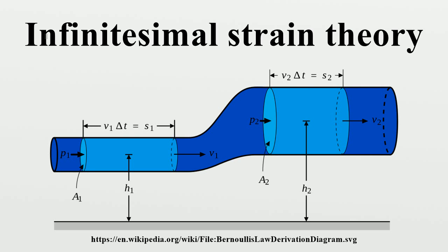This linearization implies that the Lagrangian description and the Eulerian description are approximately the same, as there is little difference in the material and spatial coordinates of a given material point in the continuum. Therefore, the material displacement gradient components and the spatial displacement gradient components are approximately equal. Thus we have the components of the infinitesimal strain tensor, also called Cauchy's strain tensor, linear strain tensor, or small strain tensor.